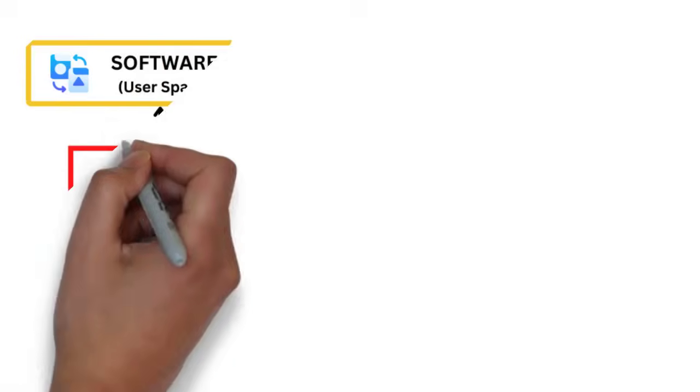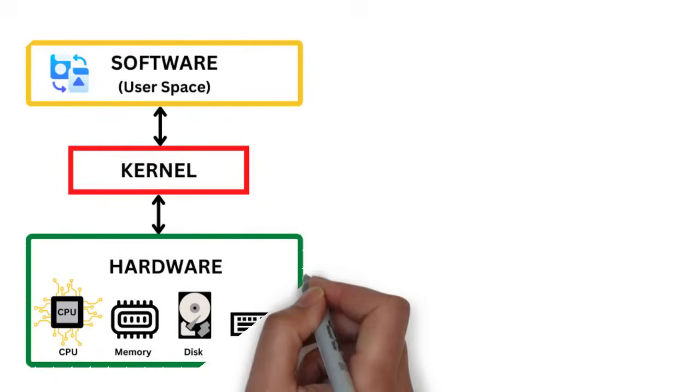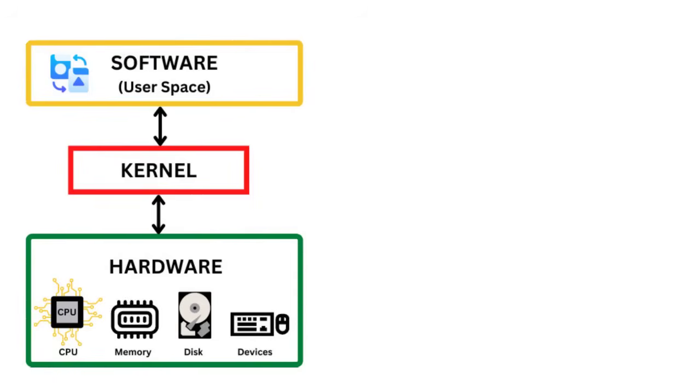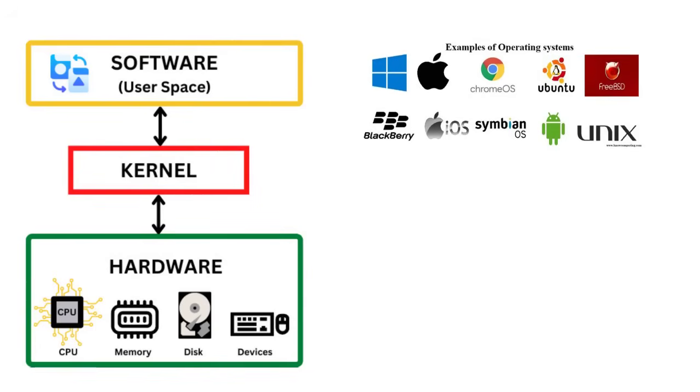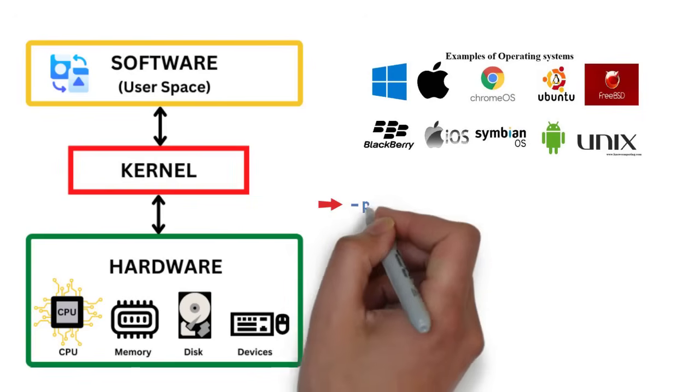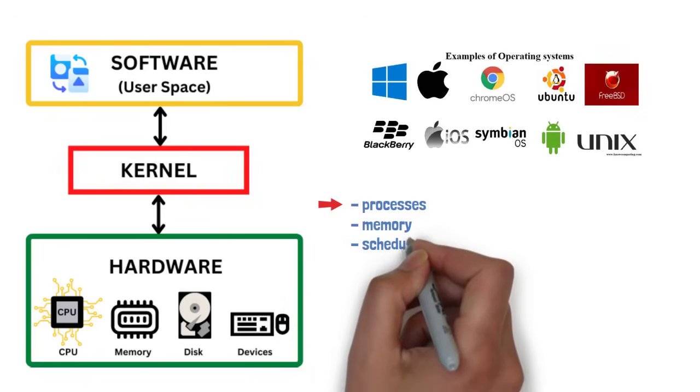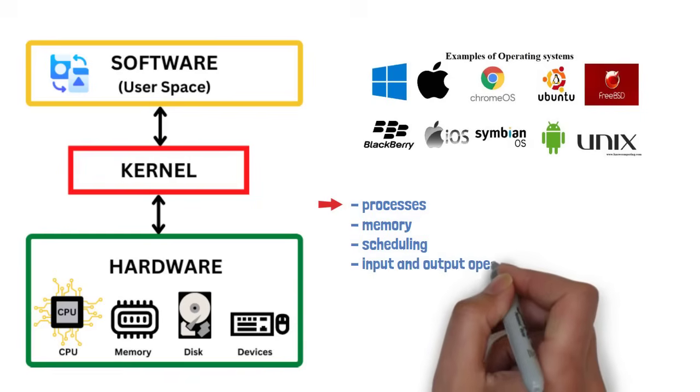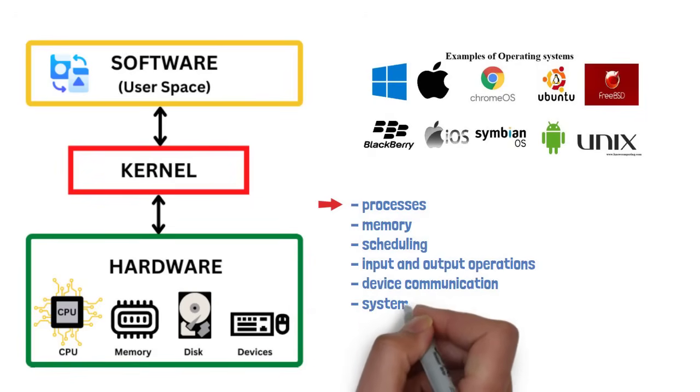The kernel is the core component of an operating system. It directly interfaces with hardware and manages system resources. It handles processes, memory, scheduling, input and output operations, device communication, and system stability.